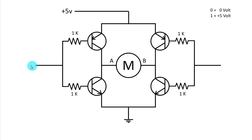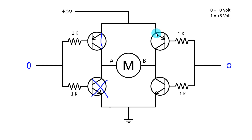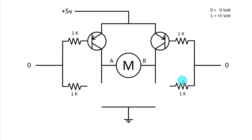Now consider providing 0 on both input points. This is a PNP transistor so it will work as a closed circuit, and the NPN transistor will work as an open circuit. On the other side, 0 also makes the PNP closed and the NPN open. The ground is disconnected from the motor, so no current will flow through the motor. If we provide 0,0 then the motor will not run.